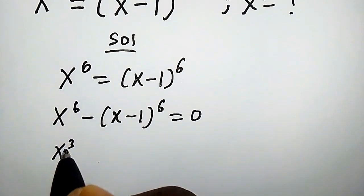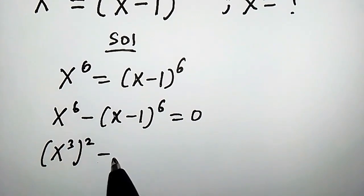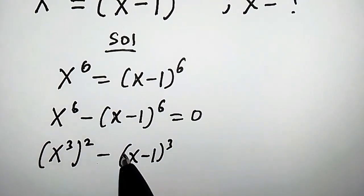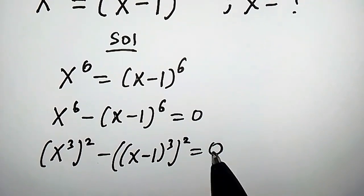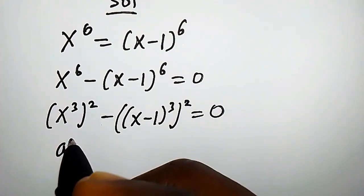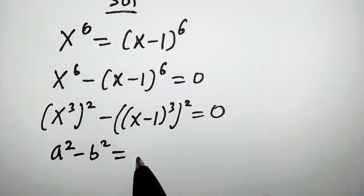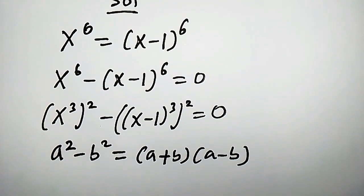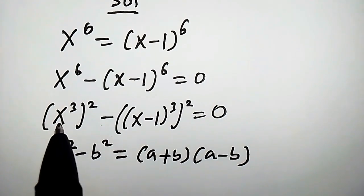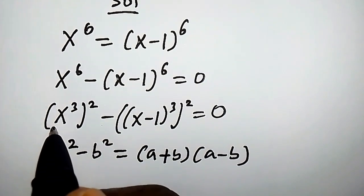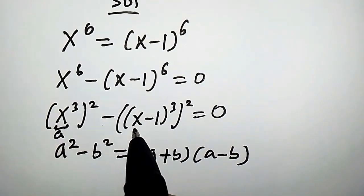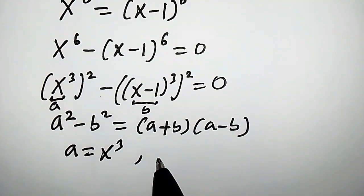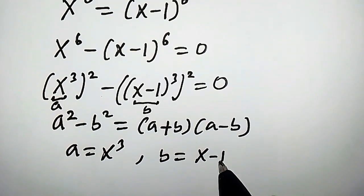This expression can be written as x to the power of 3, quantity squared, minus x minus 1 to the power of 3, quantity squared, equals to 0. Now let us recall this property: a squared minus b squared equals a plus b times a minus b — the difference of two squares. Comparing our left hand side, we observe that x cubed is a and x minus 1 cubed is b.